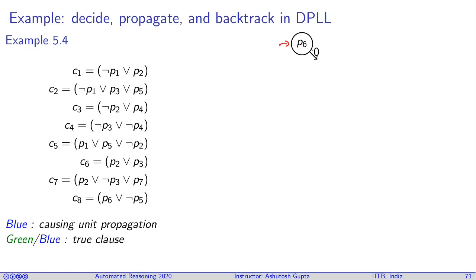Now what happens is, look at this, as soon as p6 becomes zero, if you look around you will find that p6 occurs here. Since p6 has become zero here, this has become a unit literal, and therefore you need to assign p5 to be zero, and we also write down the reason here. Why am I forced? The clause c8 is causing this to become zero. Now let's move on.